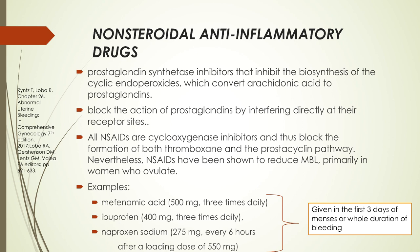We can also offer NSAIDs for abnormal uterine bleeding. Prostaglandin synthetase inhibitors inhibit the biosynthesis of cyclic endoperoxides which convert arachidonic acid to prostaglandins. NSAIDs block the action of prostaglandins by interfering directly at the receptor sites and block the formation of both thromboxane and the prostacyclin pathway. NSAIDs have been shown to reduce MBL primarily in women who ovulate. Examples include mefenamic acid 500 mg three times daily, ibuprofen 400 mg three times daily, and naproxen sodium 275 mg every 6 hours after a loading dose of 550 mg, given in the first 3 days or the whole duration of bleeding.